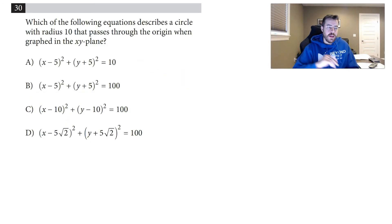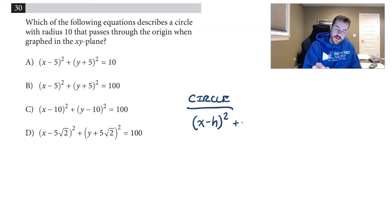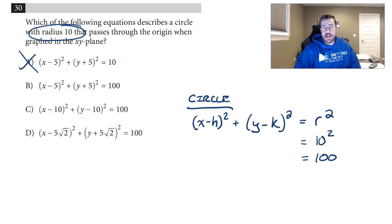Let's take a look at the next one, which is number 30. It says which of the following equations describes a circle with a radius of 10 that passes through the origin when it's graphed in the xy plane. First you should know the equation of a circle: (x - h)² + (y - k)² = r². If I know the radius is 10, then out here this would be 10², so it has to be equal to 100, which means I can eliminate A right off the bat.